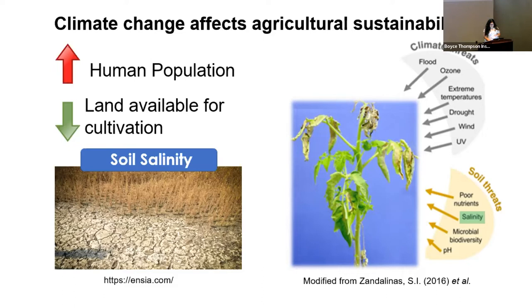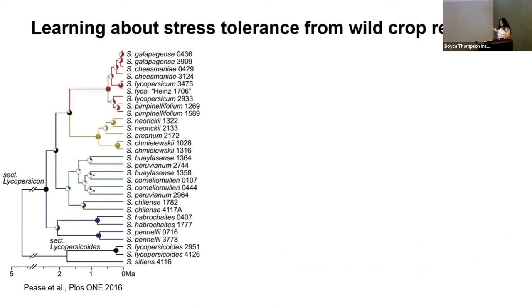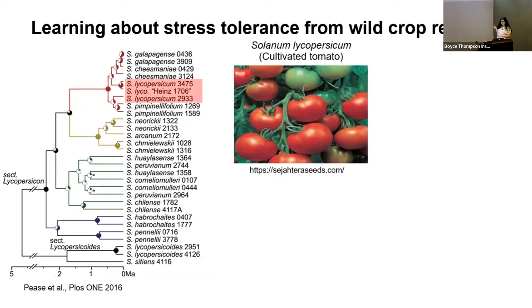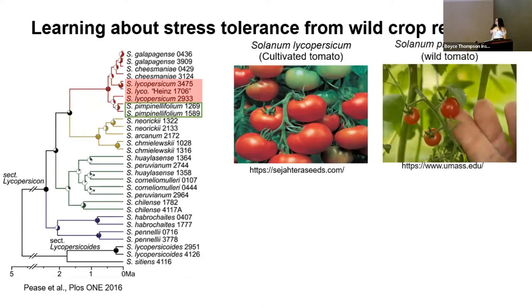Here we can observe a phylogenetic tree. We have Solanum lycopersicum, which is our cultivated tomato, and right under it we have Solanum pimpinellifolium, which is the wild tomato species. Wild tomatoes are the closest relative to cultivated tomatoes, and they are an important source for genetic improvement for cultivated tomatoes, mainly because wild tomato species are adapted to live under abiotic stress, including soil salinity.